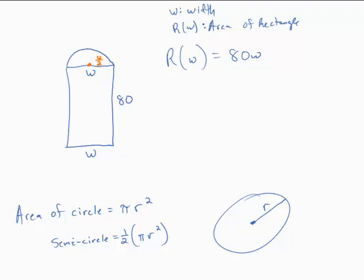So let's call S of W the area of the semicircle.